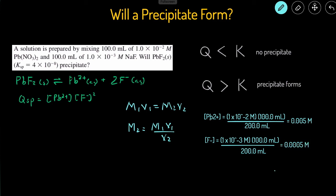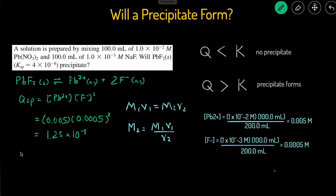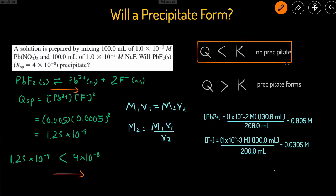Now that we have the new concentrations, let's plug them into the Qsp. The concentration of Pb²⁺ is 0.005, and the concentration of F⁻ is 0.0005 squared. That comes out to 1.25×10⁻⁹. Comparing to the Ksp, which is 4×10⁻⁸, the Qsp is less than the Ksp. This means the reaction proceeds in the forward direction toward the aqueous side, so no precipitate forms because Q is less than K.